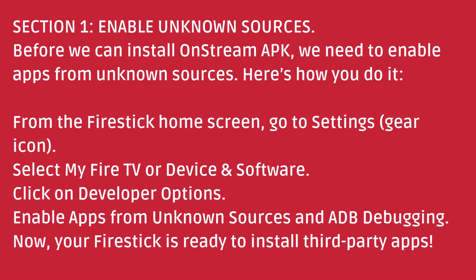Section 1: Enable Unknown Sources. Before we can install OnStream APK, we need to enable apps from unknown sources. Here's how you do it. From the Fire Stick home screen, go to Settings — the Gear icon. Select My Fire TV or Device and Software. Click on Developer Options. Enable Apps from Unknown Sources and ADB Debugging. Now your Fire Stick is ready to install third-party apps.